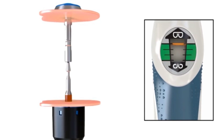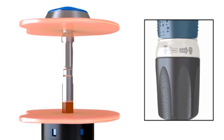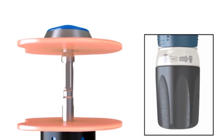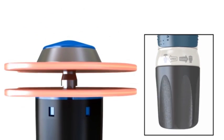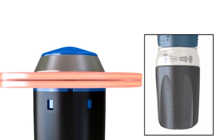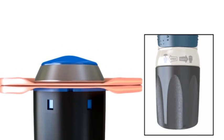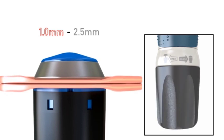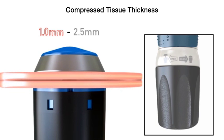The tissue compression scale combined with tactile feedback during closure assists surgeons in assessing the compressed tissue thickness. As the device is closed, tissue is approximated. The device accommodates a wide range of compressed tissue thickness, 1.0 to 2.5 millimeters.